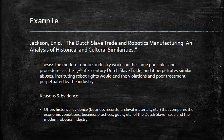Our third article, Enid Jackson's 'The Dutch Slave Trade and Robotics Manufacturing: An Analysis of Historical and Cultural Similarities,' argues that the modern robotics industry works similarly to the slave trade of the 17th and 18th century and perpetuates similar abuses. To end those violations, we would need to institute robot rights in the same way that slavery was eventually outlawed and rights extended to former slaves. The evidence includes historical texts, records, and archival material comparing the economic conditions, business practices, and goals of the Dutch slave trade to the modern robotics industry.